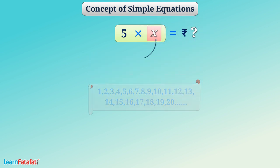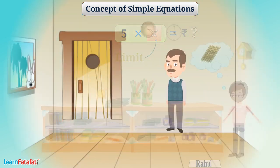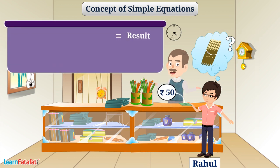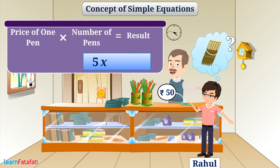Often, we set a limit on the value of variable. For example, say Rahul has Rs 50 with him. How many pens can he buy if he uses all money he got? That means, here, the result of price of one pen multiplied by number of pens, that is 5x, should be equal to the money Rahul got. We can write it as 5x is equal to 50.